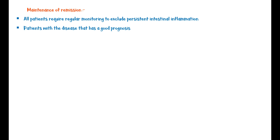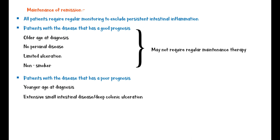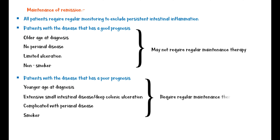Maintenance of remission is the next step in managing Crohn's disease. All patients require regular monitoring to exclude persistent intestinal inflammation. Patients with good prognosis features — such as older age at diagnosis, no perianal disease, limited ulceration, and being a non-smoker — may not require regular maintenance therapy. But patients with poor prognosis features — such as younger age at diagnosis, extensive small intestinal disease, deep colonic ulceration, complicated perianal disease, and being a smoker — will require regular maintenance therapy.